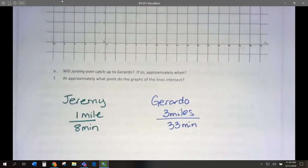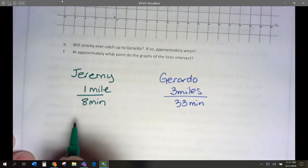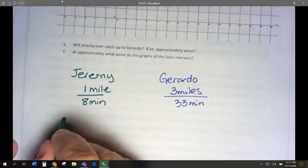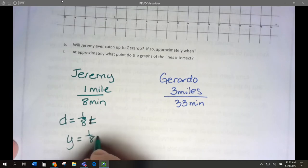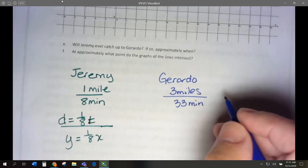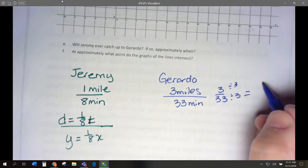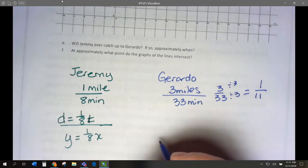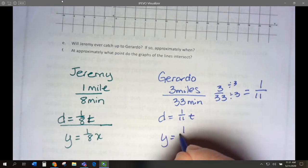Okay, so Gerardo runs 10 extra minutes. So if Jeremy runs 1 mile for every 8 minutes, his speed is 1 eighth, right? 1 mile per 8 minutes. So for Jeremy, our distance is going to be 1 eighth times our time, right? Our y is going to equal 1 eighth x. For Gerardo, 3 over 33. But we can reduce this, right? Divide by 3. And we're going to get 1 over 11.